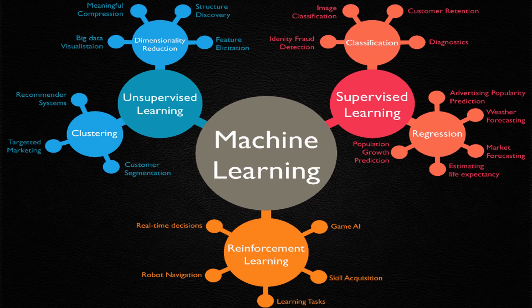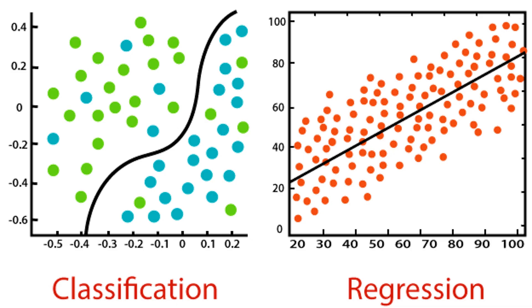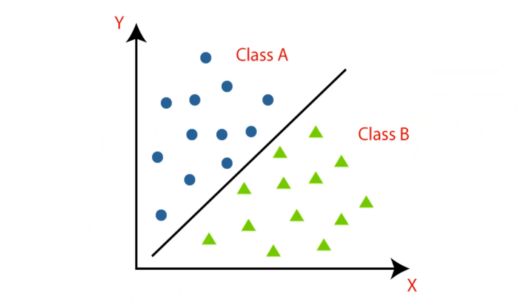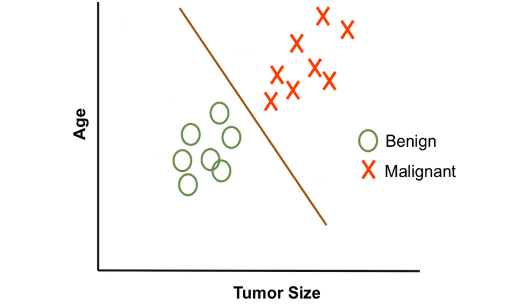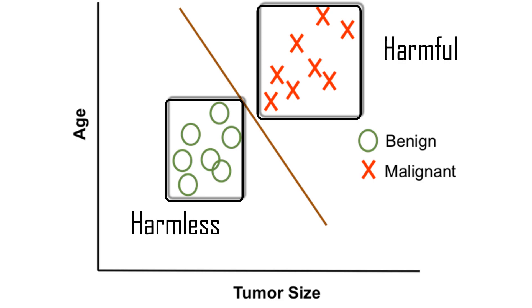So what does classification stand for? Classification is the second type under supervised learning. In classification, we are interested in finding the classes, not the continuous values. For example, given data on tumor sizes — say harmless and harmful tumors — plotted on the x and y axis, we are expected to find the classes: whether the tumor is harmless or harmful. The expected output here is to find the class — yes or no — not the actual value.